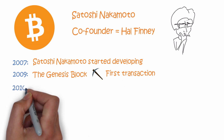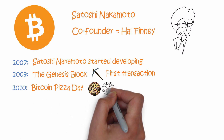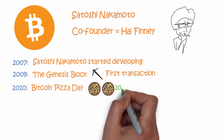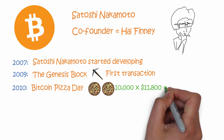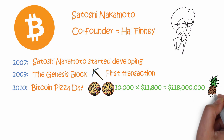On February 22, 2010, bitcoin was first traded in the real world. The programmer paid 10,000 bitcoins for two pizzas. This day is known as Bitcoin Pizza Day. As mentioned earlier, one bitcoin is worth 11,800 dollars, so those pizzas would cost 118 million dollars today. Let's move on with the history of bitcoin.